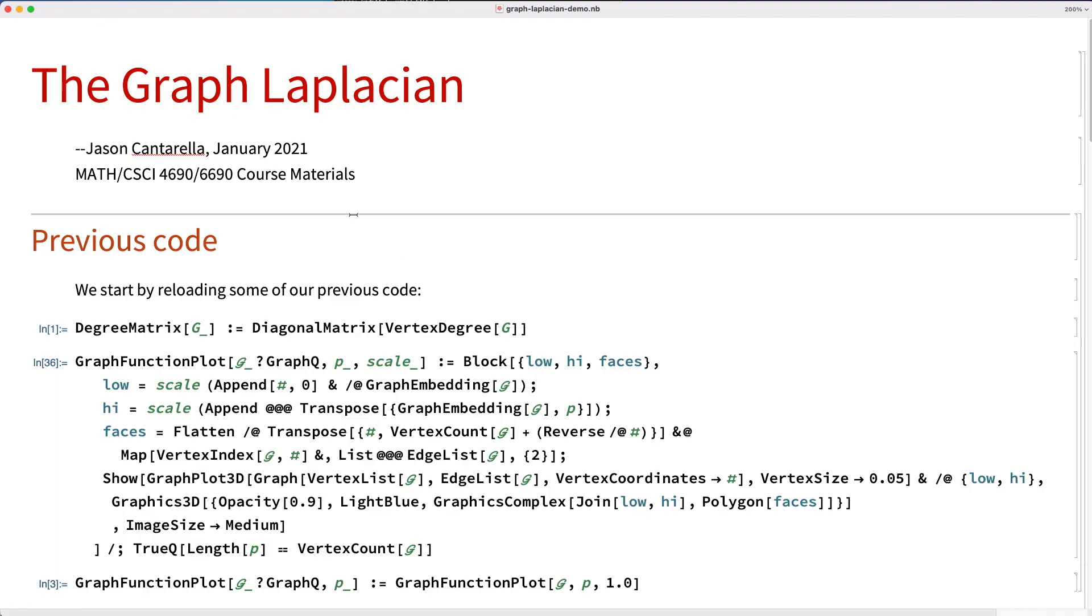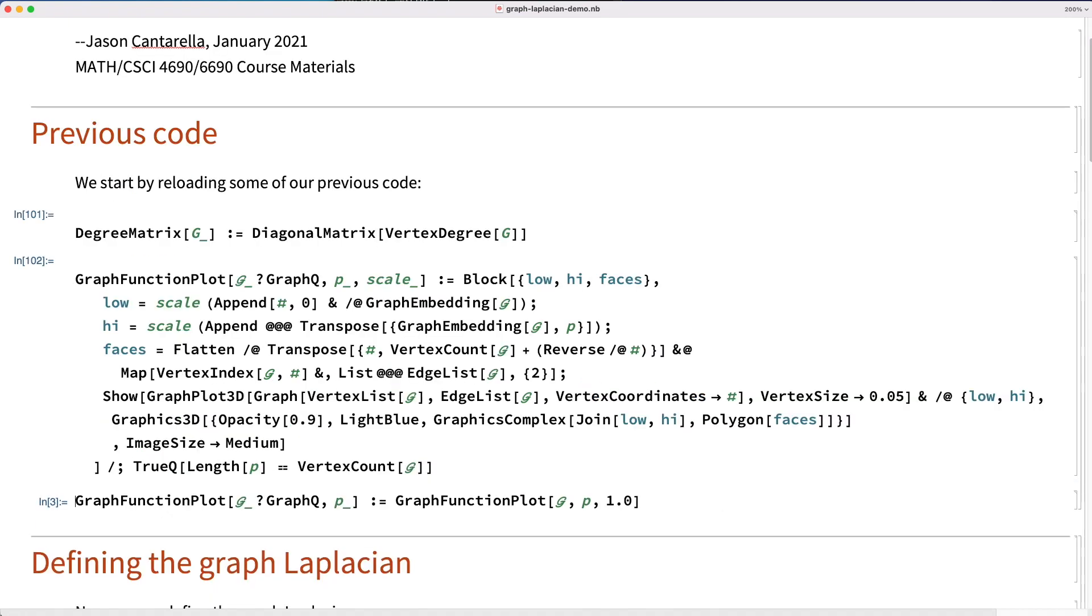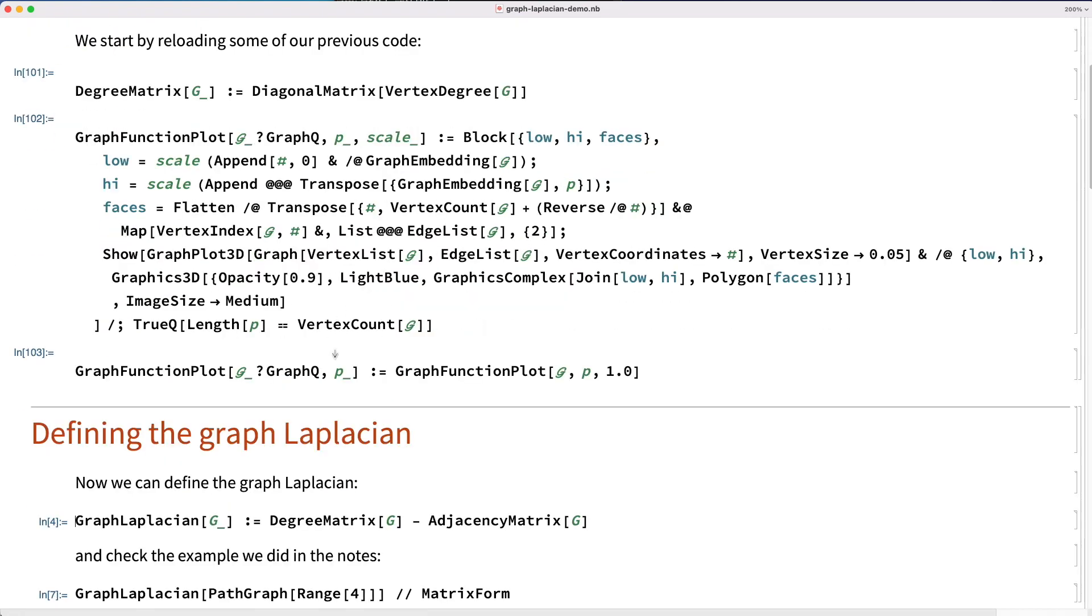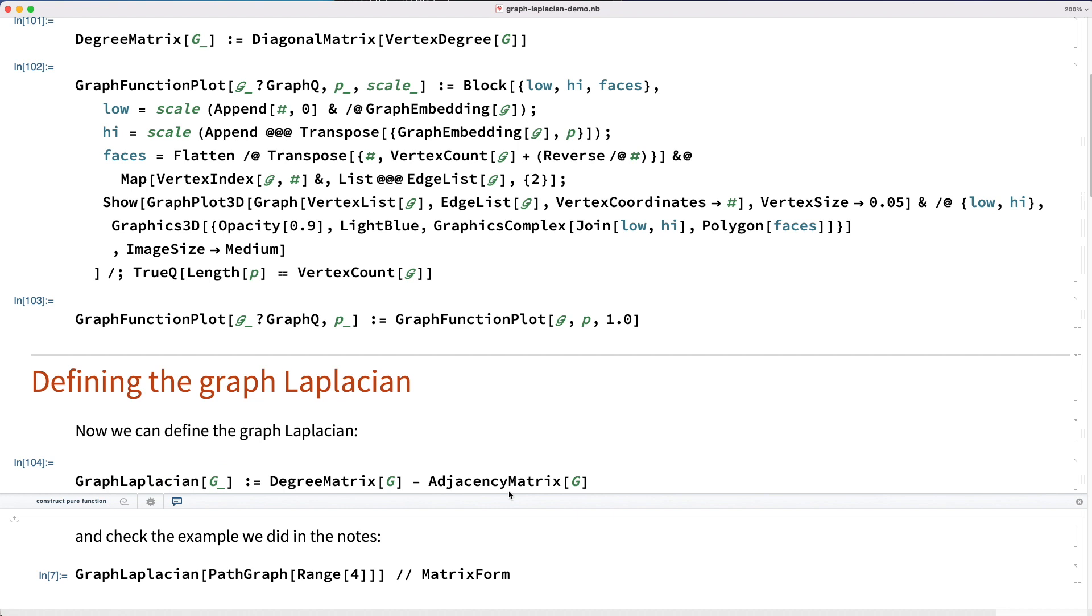We're now going to do a demonstration of the graph Laplacian itself. Let's start by reloading some of our previous code, the degree matrix, the function phi, and now we're going to define the graph Laplacian just like we did in the notes to be the degree matrix minus the adjacency matrix.